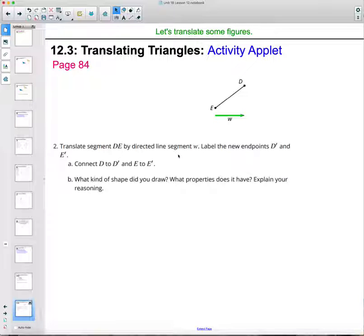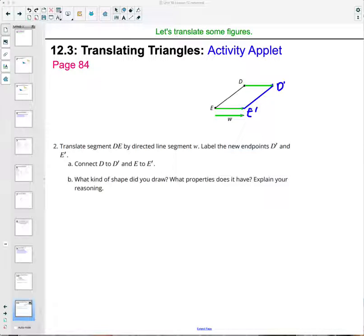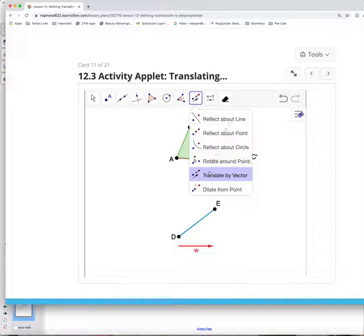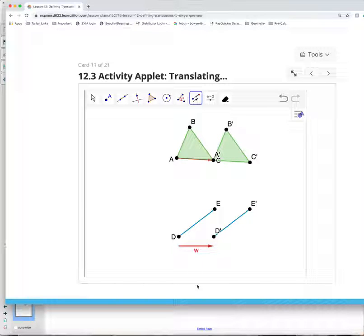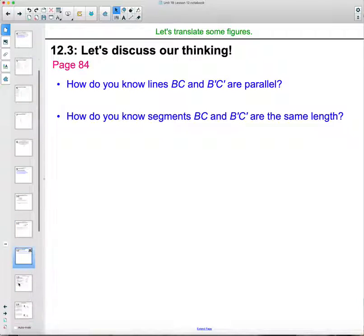Alright, then translate segment DE by the directed line segment W. So now we're going to move D and E this same direction here. So we're going to move it E to here and D to here. And then we'll be able to connect those. So connect E prime to D prime. So this would be where our new E or our E prime was and this would be where D prime was. So looking at the applet, then we're going to translate by vector this segment by this vector, so it's already drawn there. So then we can see it'll just move it right over. Again going to be a little bit harder on your student workbook to make sure that you do it correctly. So as you try and draw this line, just make sure it's parallel here.